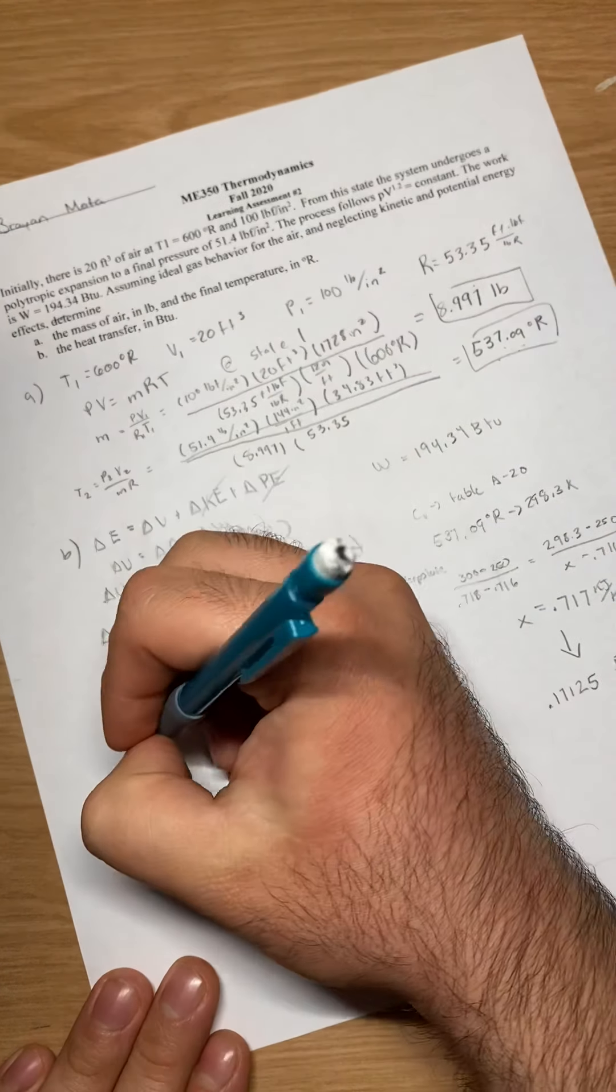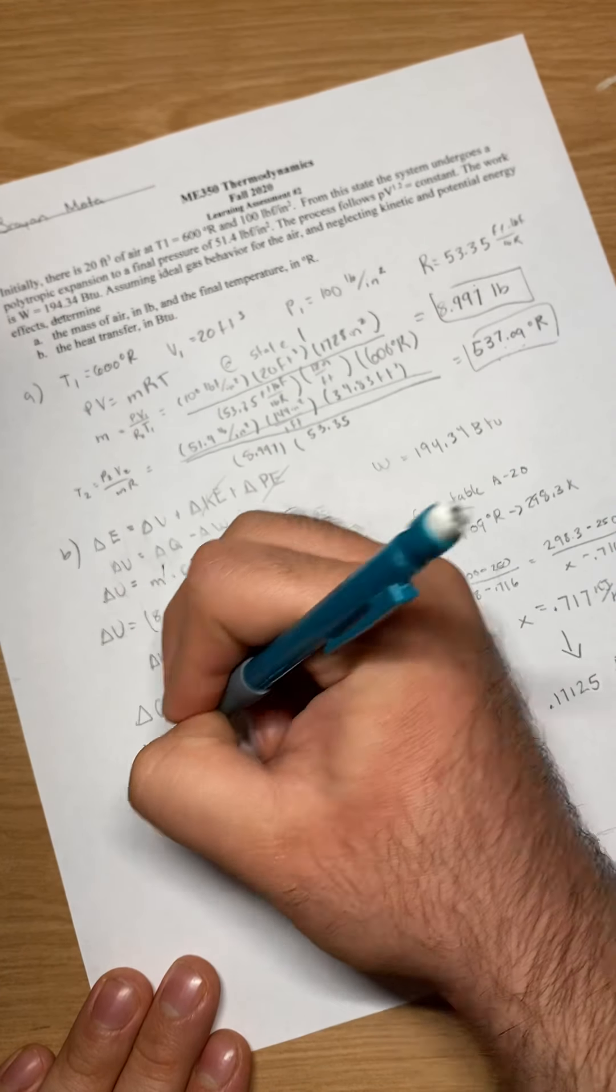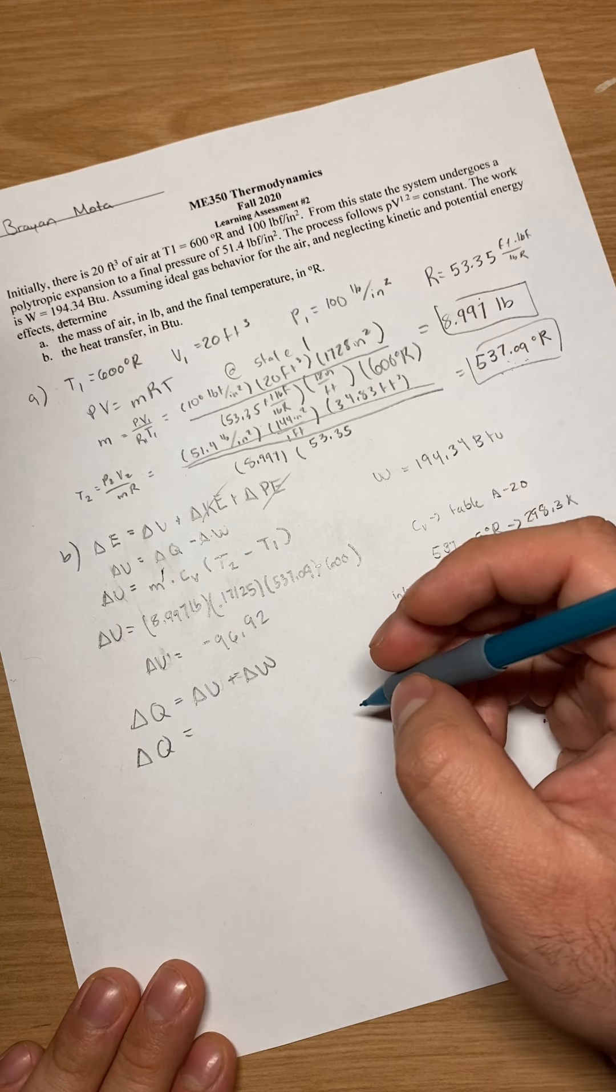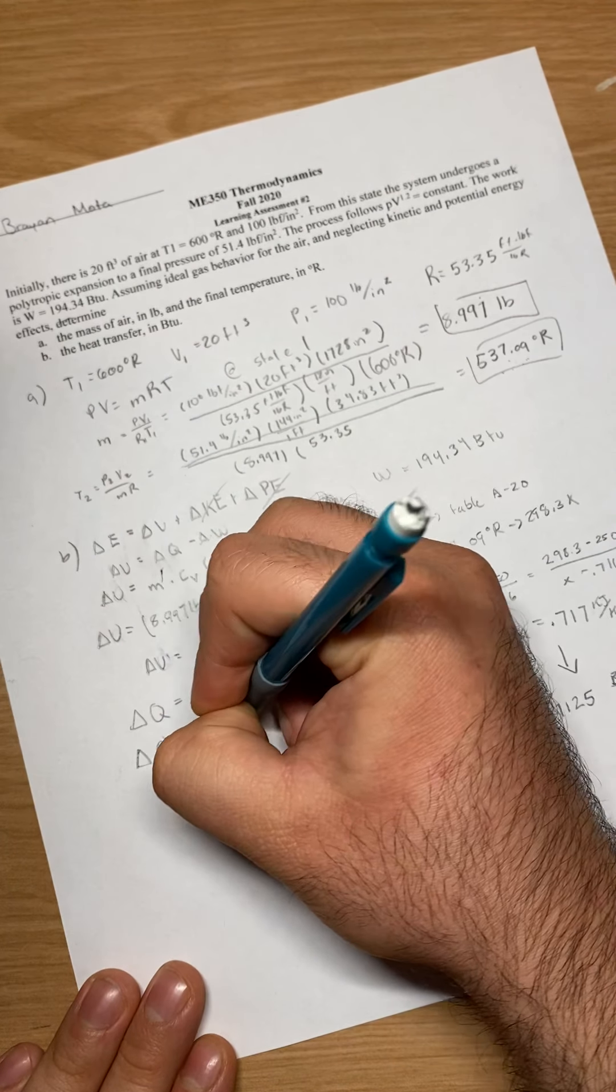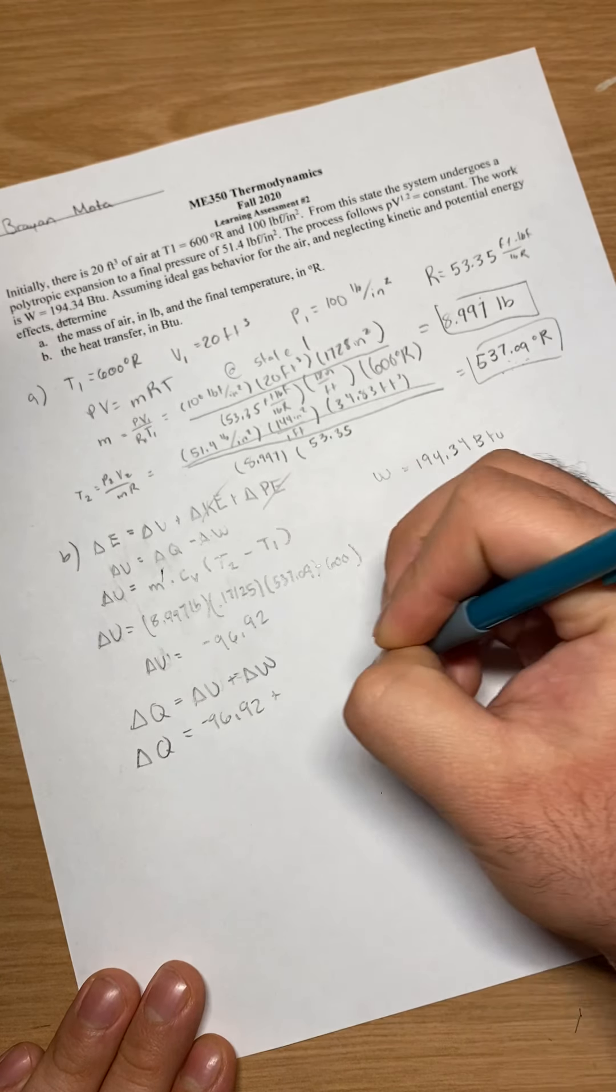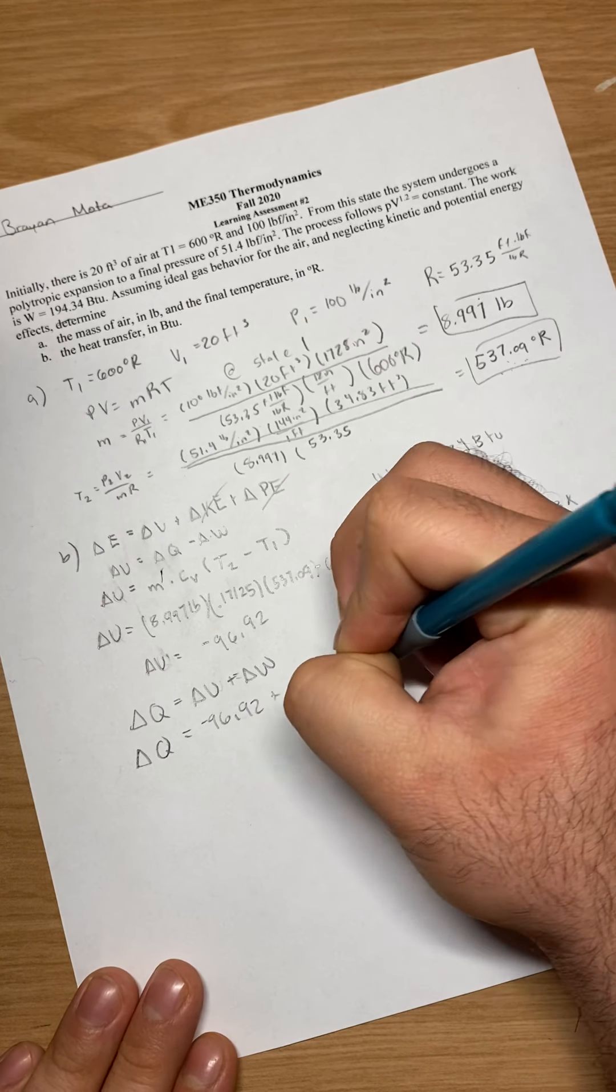So here I plug in my values. So delta Q equals my negative 96.92 plus my work that is given, which is 94.34.